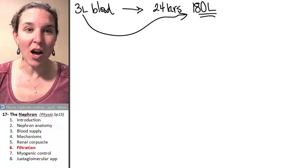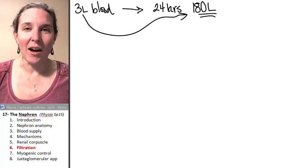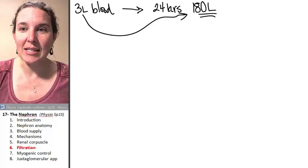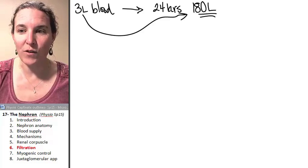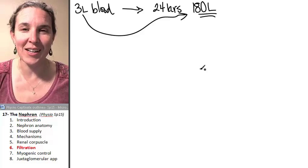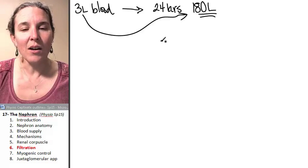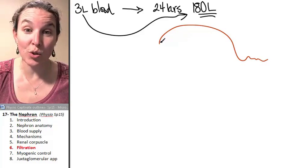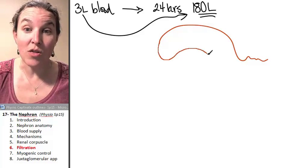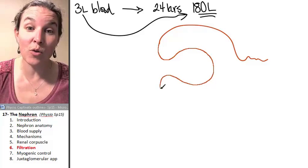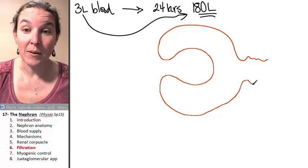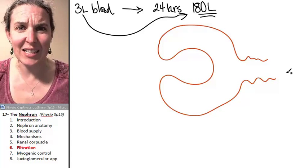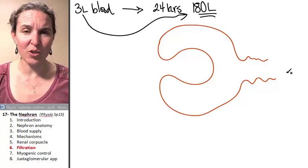But filtration, you should be thinking right now, something is seriously wrong if you can filter out 180 liters of fluid. Well, there's a couple of factors that come into play. First of all, as you know now, the structure of the renal corpuscle facilitates filtration.